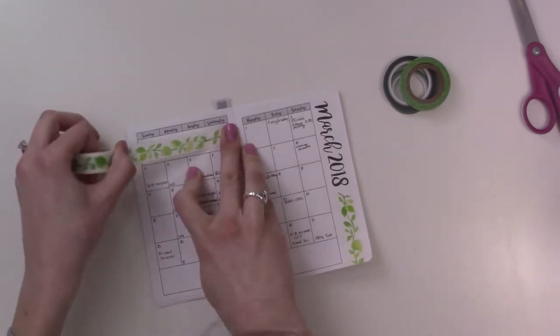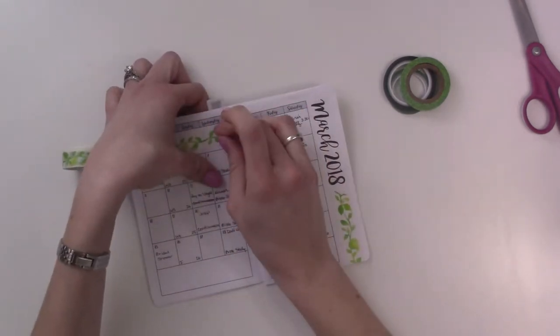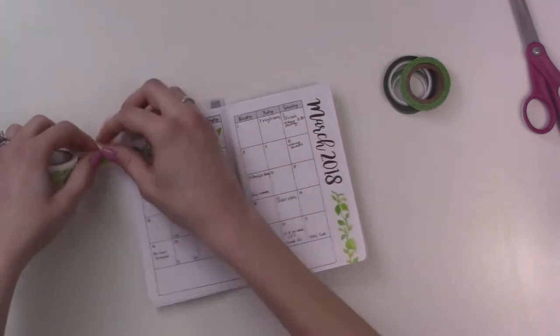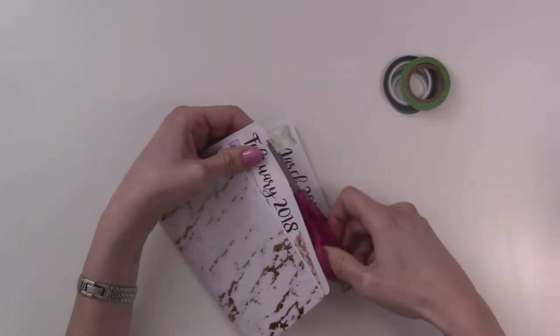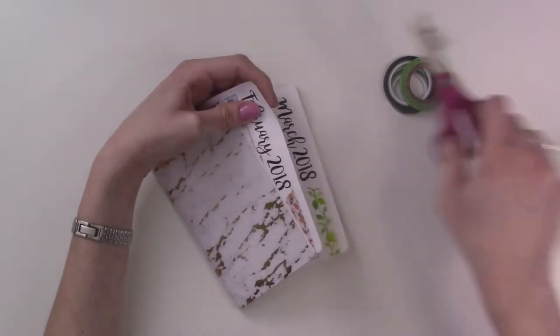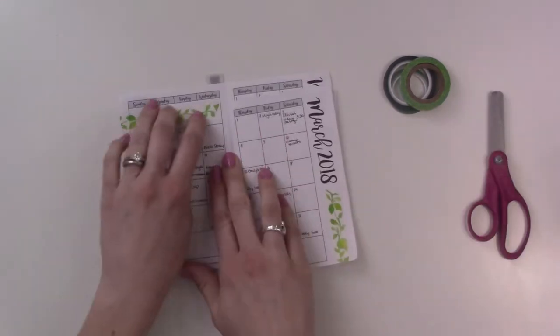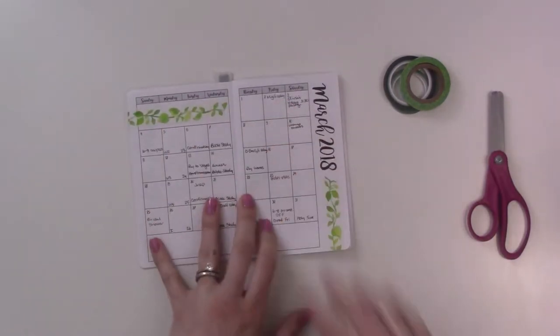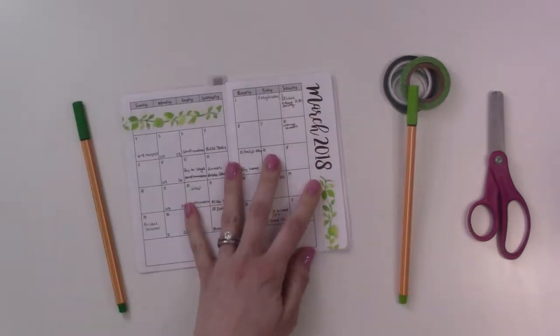I'm going to be erasing some of this stuff and replacing it as well. Yeah, you see I trim my washi tape with just a pair of scissors—pretty normal. I don't bind my inserts, by the way.